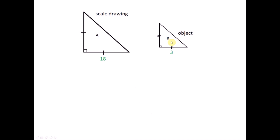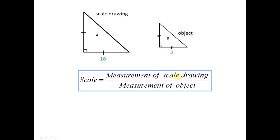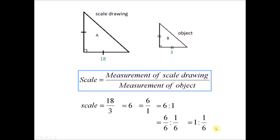Now using the scale formula: scale = measurement of scale drawing / measurement of object = 18 / 3 = 6. To write in the form 1 to n: 6/1 in ratio form, divide both by 6, giving 1 to 1/6. So n = 1/6. This concludes the video for Summative Exercise 2. Thank you.